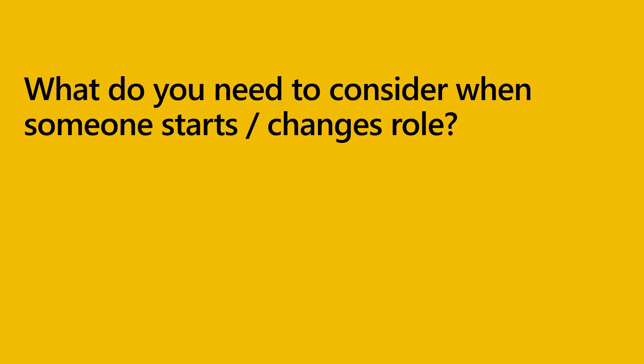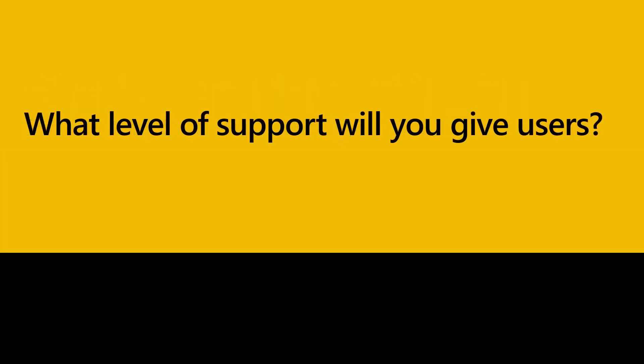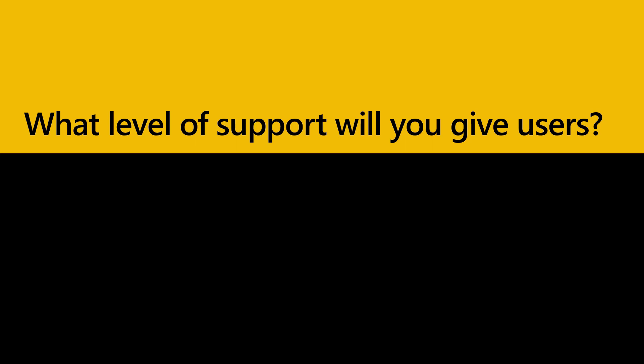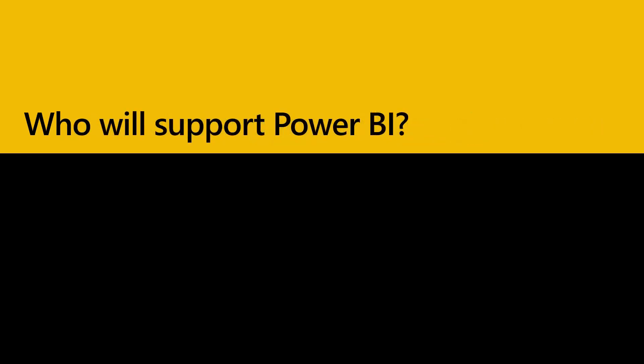When planning a rollout and creating a support team, it's important to integrate any access requirements into existing new starter or role change processes. This may include granting or removing access to a gateway or its data sources, assigning Pro licenses, or granting access to Power BI Desktop. We strongly recommend deciding the areas you're going to support and documenting them, so end users clearly know where they can go for further help. As well as documenting the level of support, you need to highlight who will provide these various levels of support. Changing links in the Power BI service is one way, but providing links in rollout communications and newsletters will ensure everyone knows who can support them with the various aspects of Power BI.